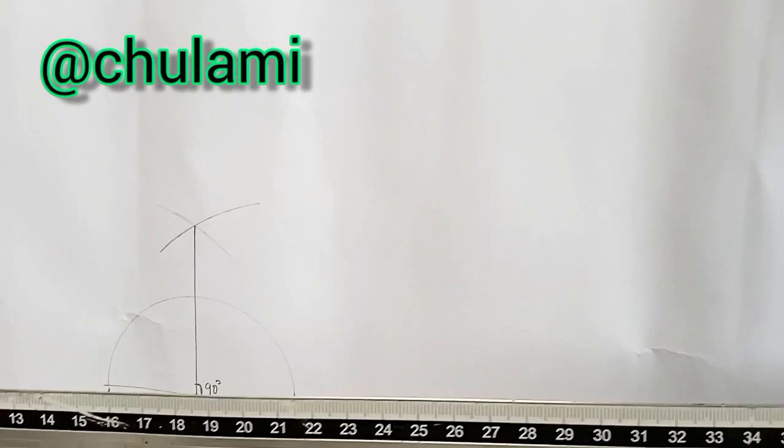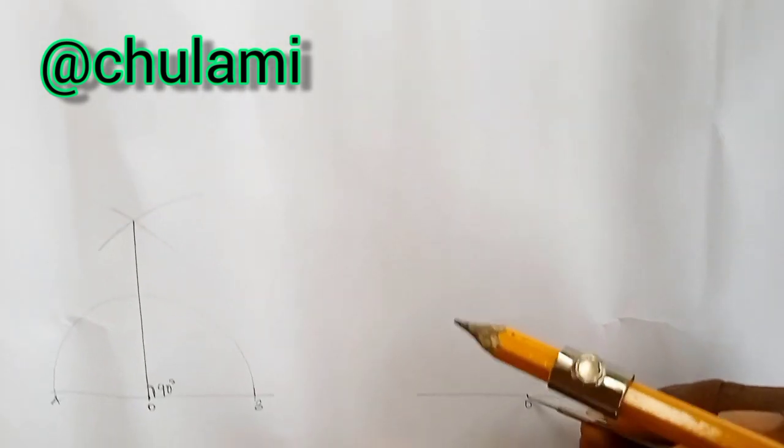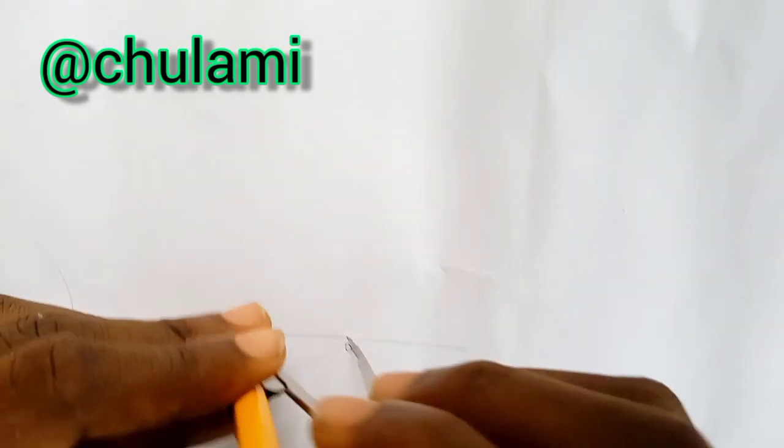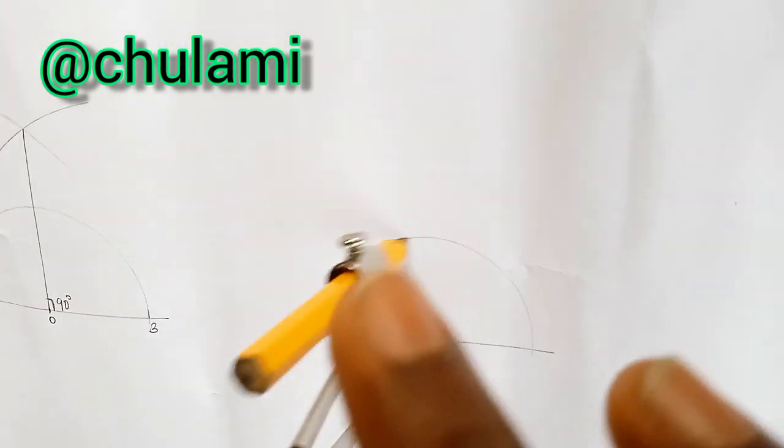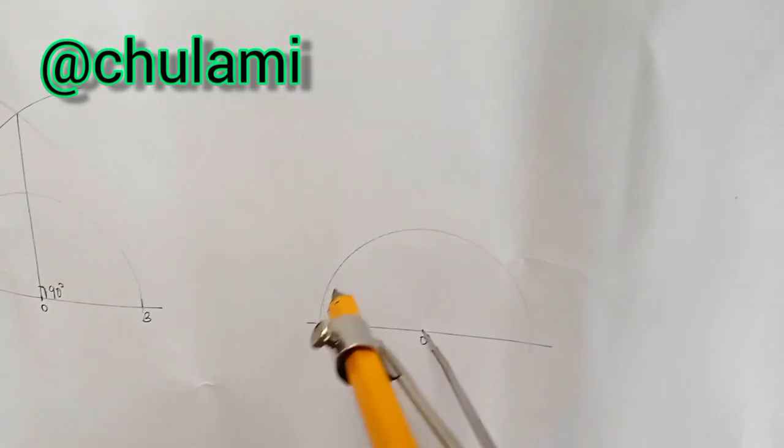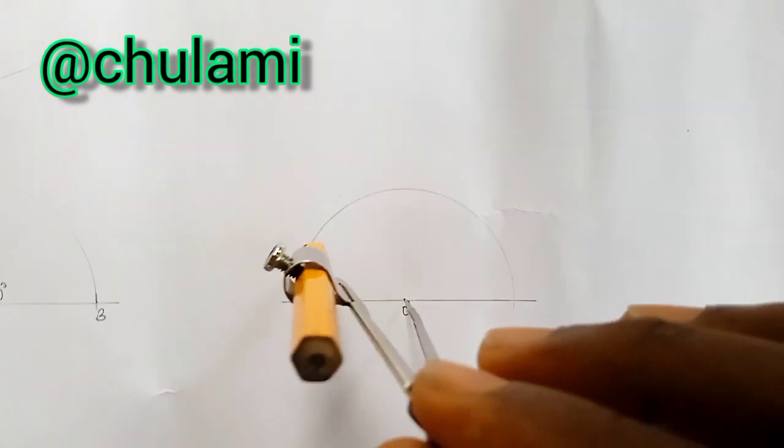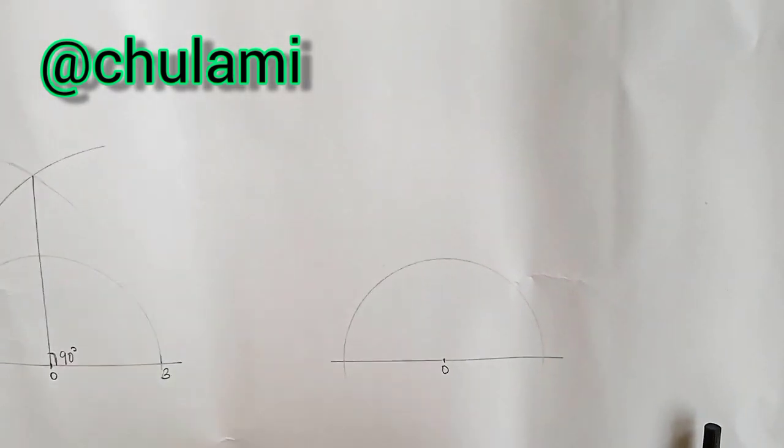Now let's do the one for 60 degree. Same thing, you draw a line, a straight line. If you mark a point at the line, you call it zero. Pivot here at point zero, you draw a semicircle at any radius of a choice. You can open the protractor to any given radius of a choice. After drawing that, you can also call here A and B.